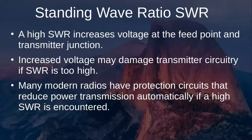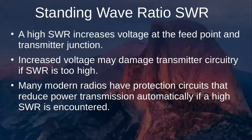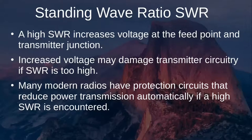A high SWR also increases voltage at the feed point and at the transmitter junction. Increased voltage may damage the transmitter circuitry if SWR is too high. In many modern radios, the radio senses this voltage increase and reduces its power output as a protective mechanism — great for protecting your radio, but it means less power is transmitted and your signal is essentially diminished.